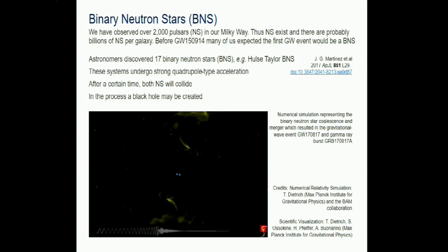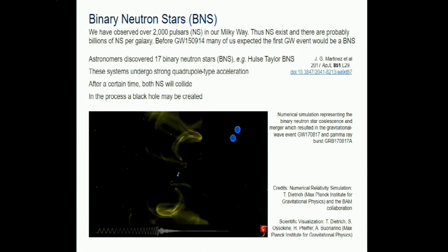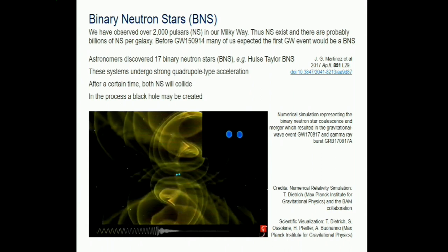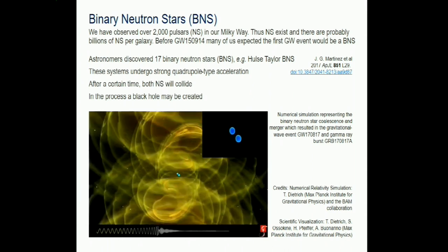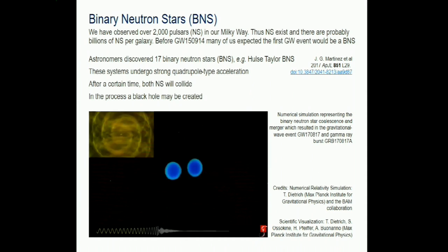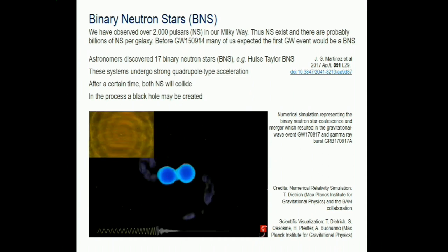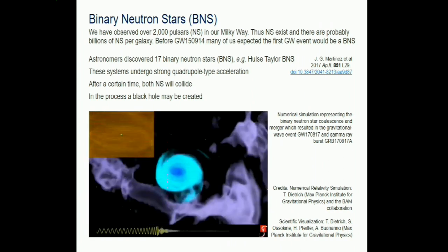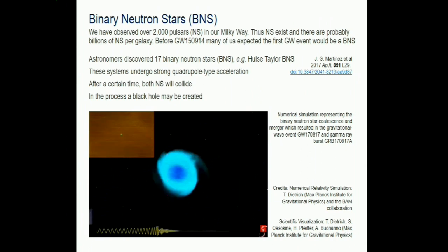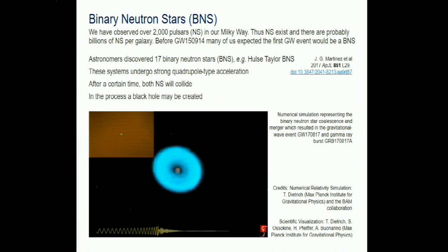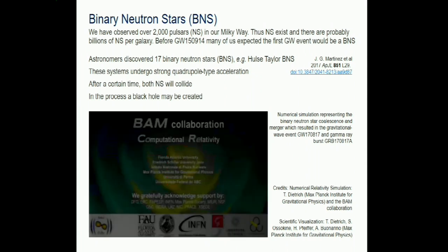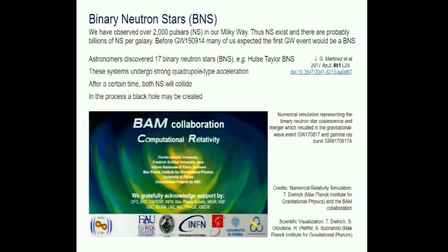A simulation based on parameters of the binary neutron star detected in 2017 shows two neutron stars - blue colors indicate density, the red stuff over here is the more intense gravitational waves, and the purple stuff is ejected mass. The gravitational waveform shows a hypermassive neutron star being formed that then collapses into a black hole. We have very little information about the high-frequency part of the later evolution.